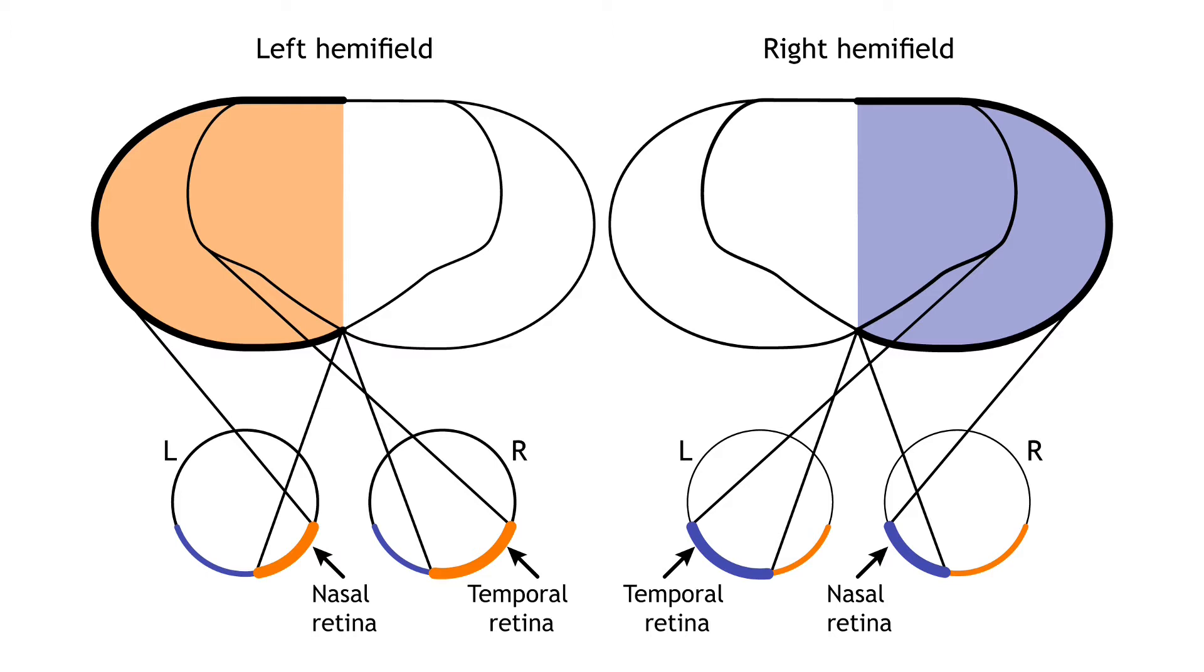Both eyes are involved in viewing each hemifield. The fovea separates the retina into two sections, the nasal retina and the temporal retina. The nasal retina is the medial portion that is located toward the nose. The temporal retina is the lateral portion that is located toward the temples and temporal lobe.